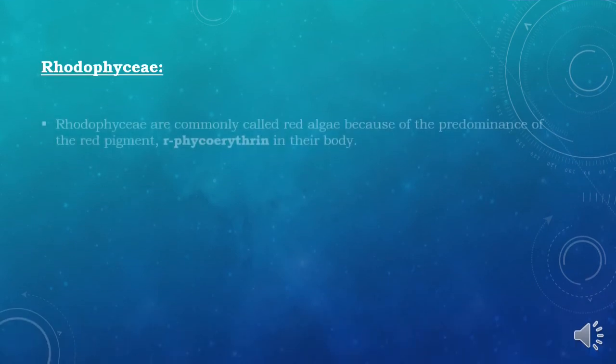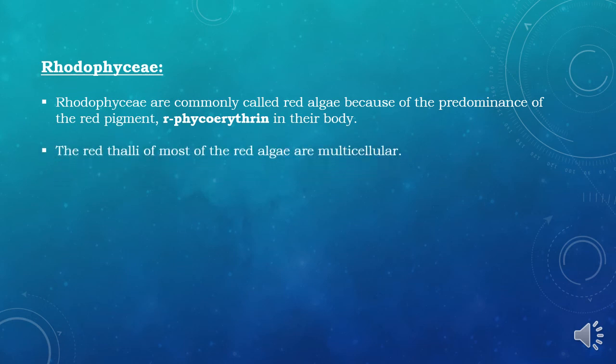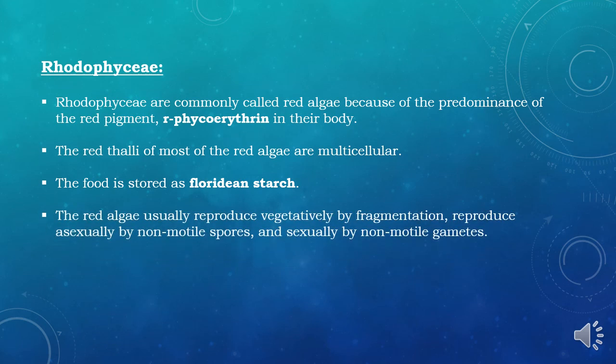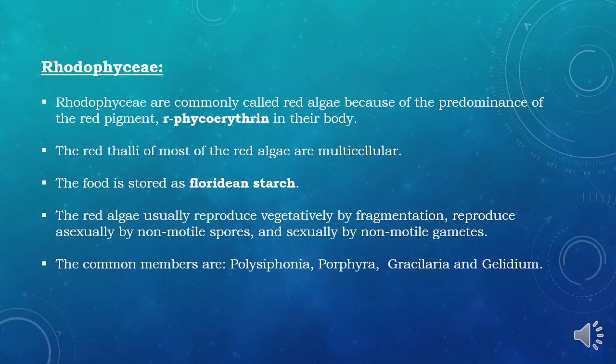The third division is Rhodophyceae, commonly called red algae, because of the predominance of the red pigment phycoerythrin in their body. Most red algae are multicellular. Food is stored as floridian starch. Red algae usually reproduce vegetatively by fragmentation, asexually by non-motile spores, and sexually by non-motile gametes. Common members include Polysiphonia, Porphyra, Gracilaria and Gelidium.